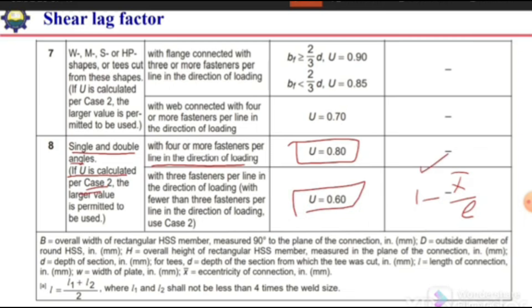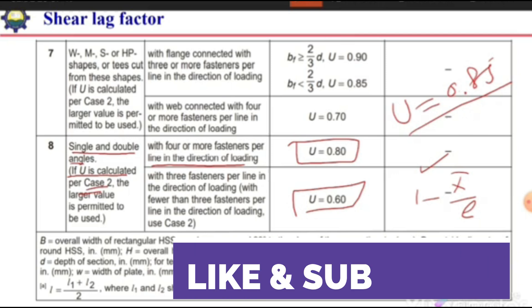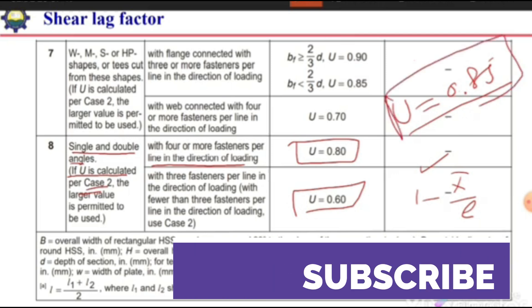The exact value of shear lag factor can be calculated once we know the connection detail, but initially for design we need to estimate a reasonable value — sometimes 0.85 or another suitable value. After deciding the connection detail, we recheck the shear lag factor and again verify the capacity at the net section — the tensile strength in fracture at the net section — after designing the connection.